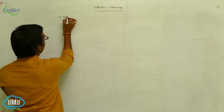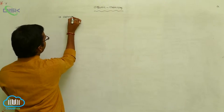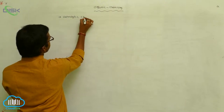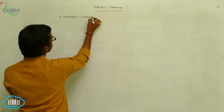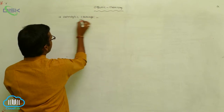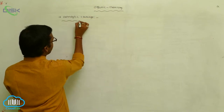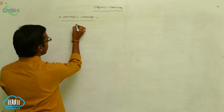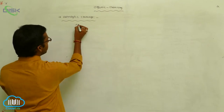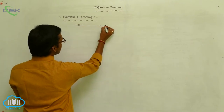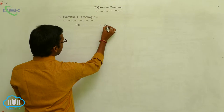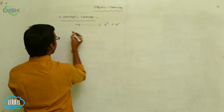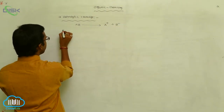For heterolytic cleavages, during heterolytic cleavages, cations and anions are formed. So A-B undergoes heterolytic cleavage and gives a cation and an anion.